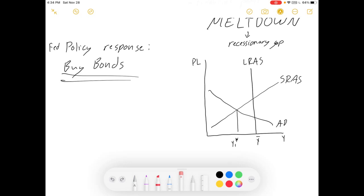Federal Reserve policy response: buy a bunch of bonds. Here's your money supply, your money market, your interest rate. Buy a bunch of bonds, the money supply goes up, and the interest rate goes down.